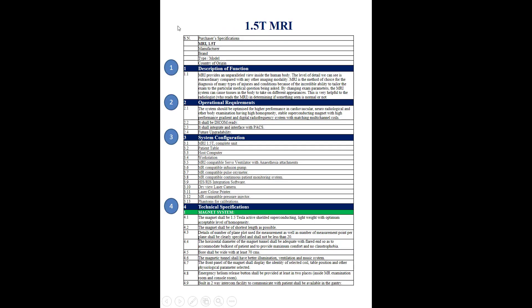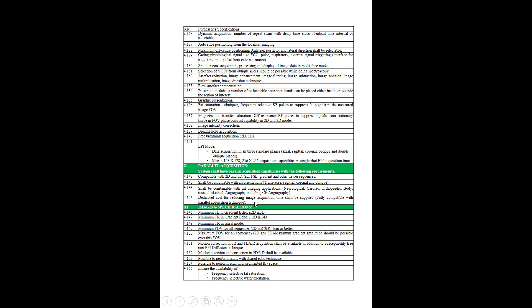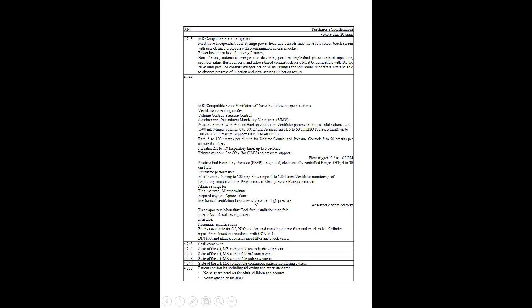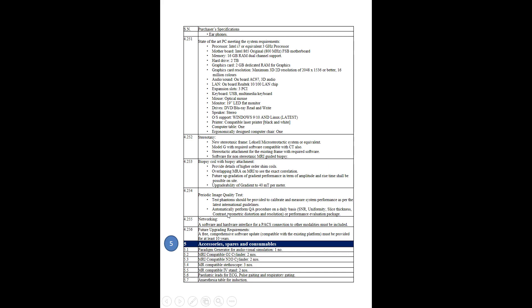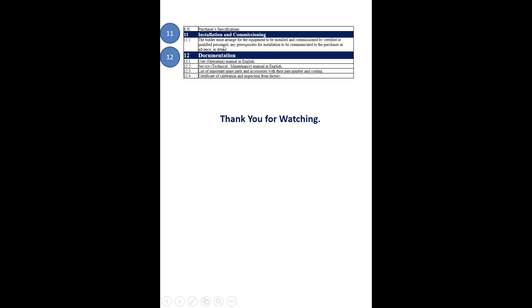The points which should be covered in writing the specification for a 1.5 Tesla MRI include: a description of function, operational requirements, system configuration, technical specifications, accessories, spare parts and consumables, operating environment, standards and safety requirements, user training and service training, warranty, maintenance service during the warranty period, installation and commissioning, and finally documentation.